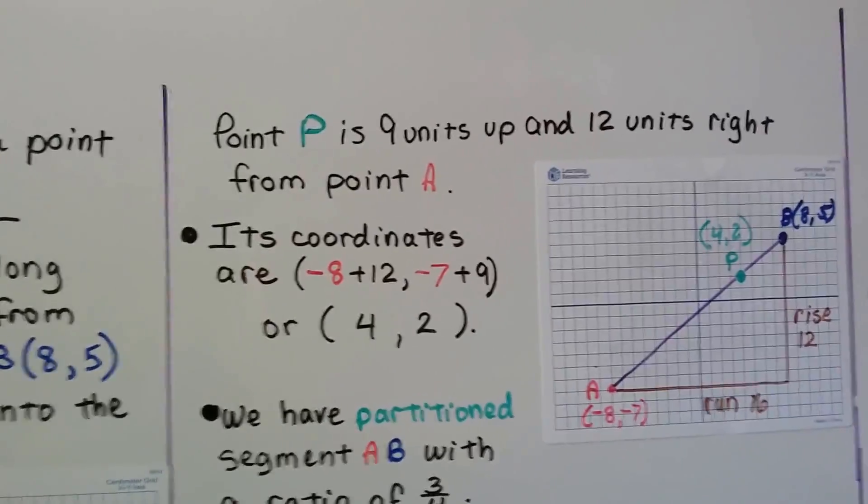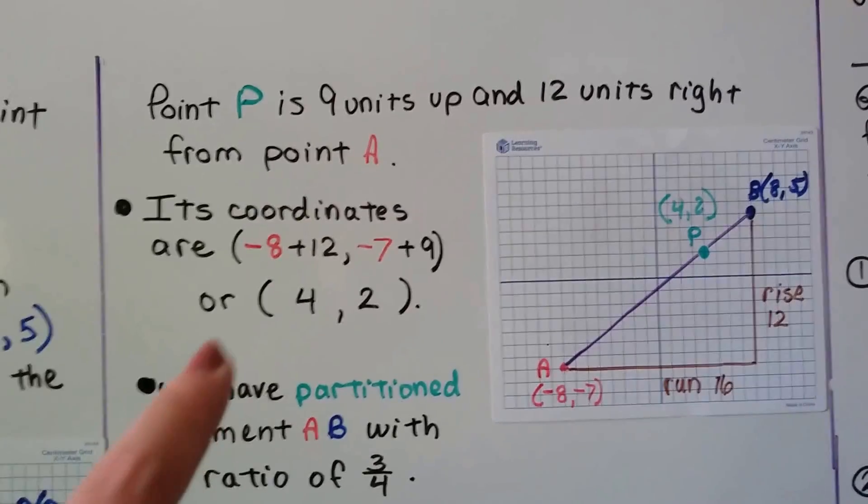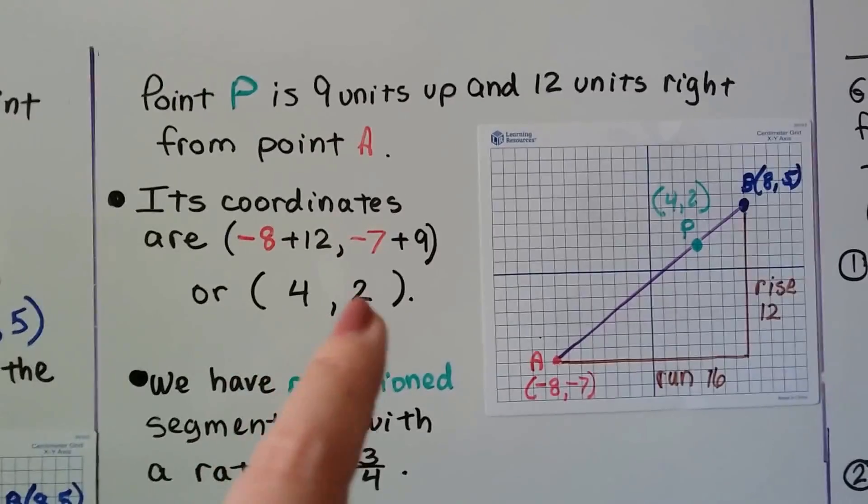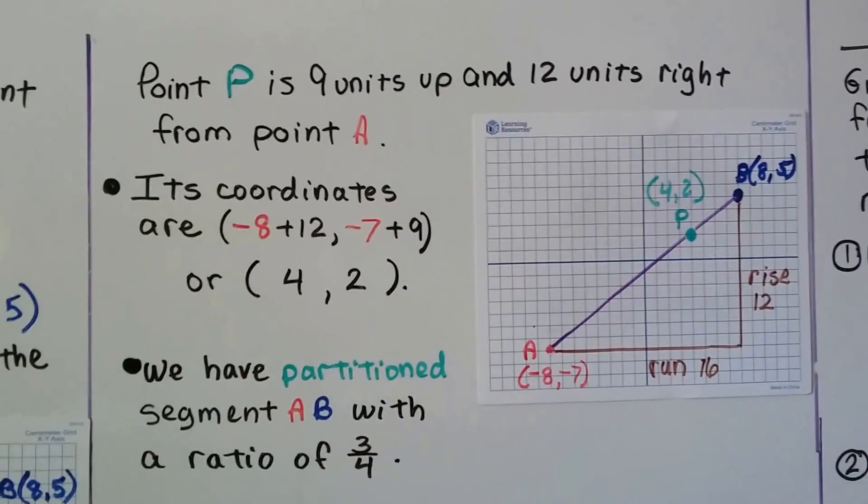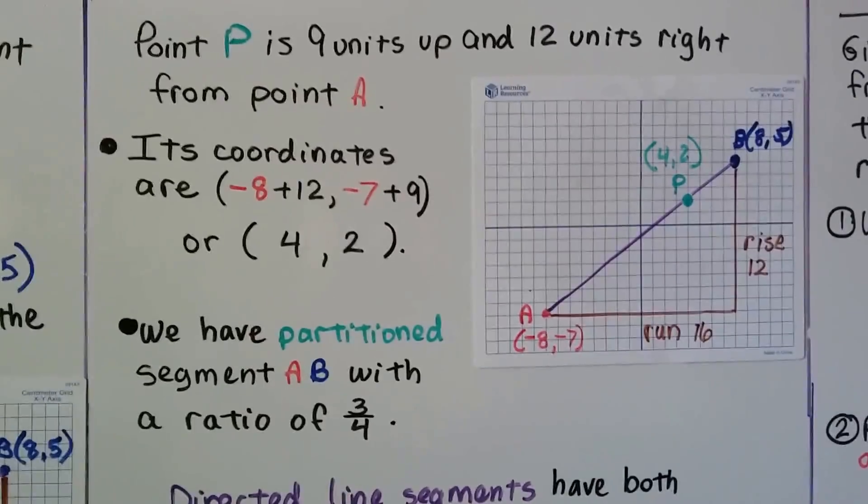And point P is 9 units up and 12 units right from point A. And its coordinates are negative 8 plus 12 and negative 7 plus 9. So it's at 4 for x, 2 for y. And we've partitioned segment AB with a ratio of 3 fourths.